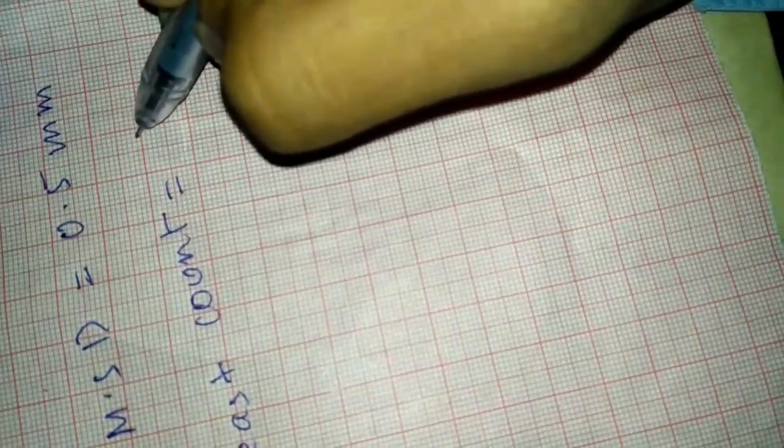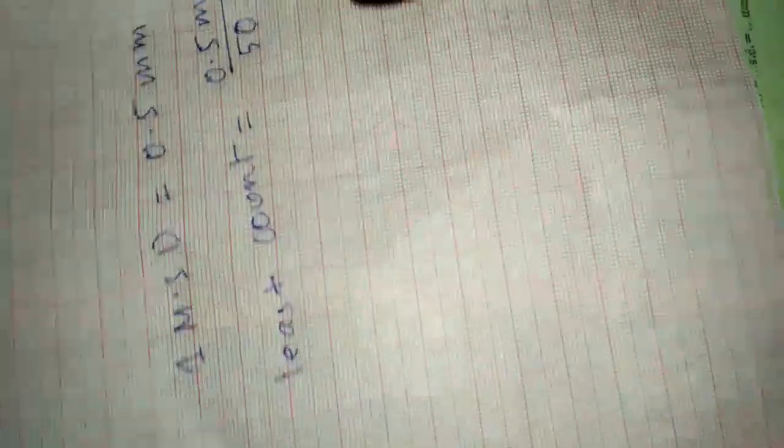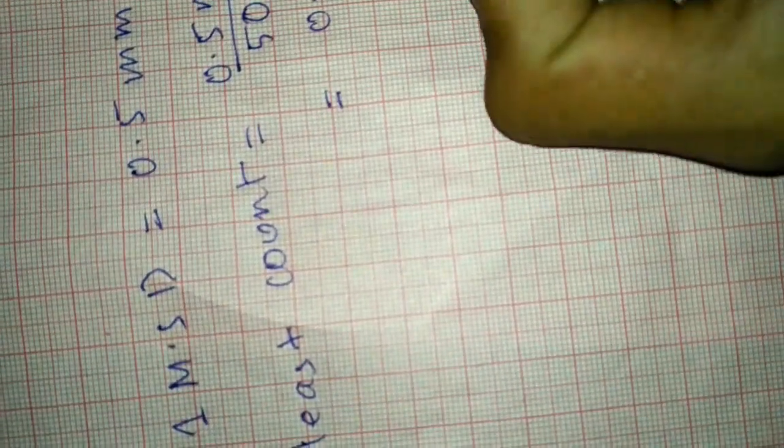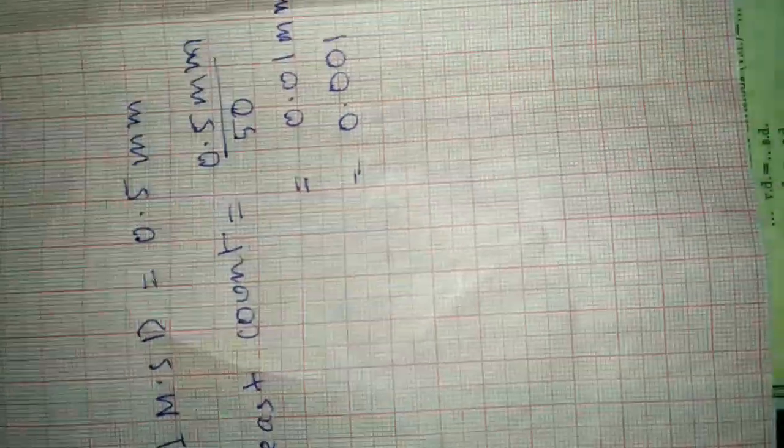Now we will find the least count. Generally, least count is equal to one MSD in millimeters divided by 90 Vernier scale divisions. That gives us 0.01 mm. We then convert this millimeter value into centimeters to get the least count in centimeters.